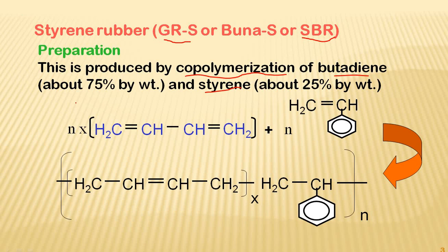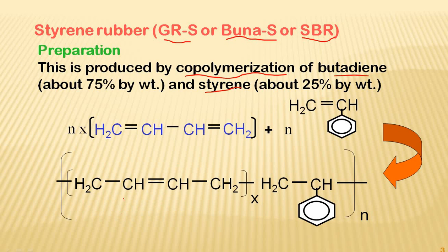Now let's see the different types of rubbers. The first kind is styrene rubber, also called Buna S rubber or styrene-butadiene rubber. It is produced by copolymerization — when two different monomers combine it is called a copolymer. Here we take butadiene and styrene, which are different monomers, combining in the ratio of 75 percent butadiene and 25 percent styrene to get styrene-butadiene rubber.